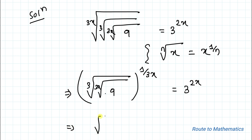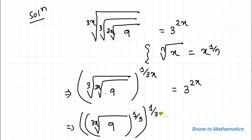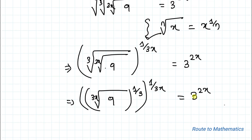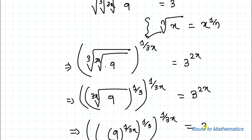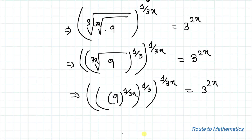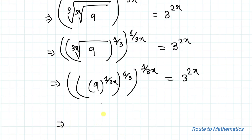Now again we can write the 3x-th root of 9, whole to the power 1 by 3x, equals 3 to the power 2x. This implies 9 to the power 1/(2x). Now 9 can be written as 3 squared, so we can write (3²) whole to the power 1 by 3x.